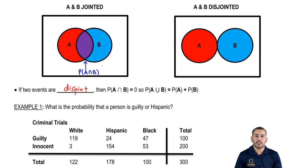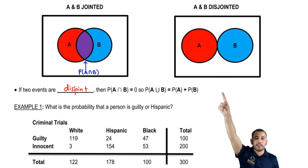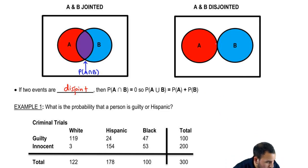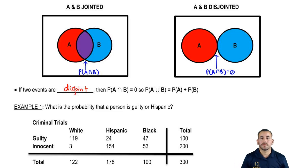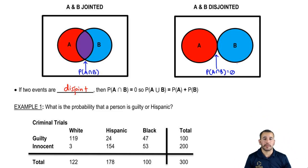For disjoint events, probability of A and B is zero because there's no intersection. So the formula just basically drops the final term because there is no probability of A and B.